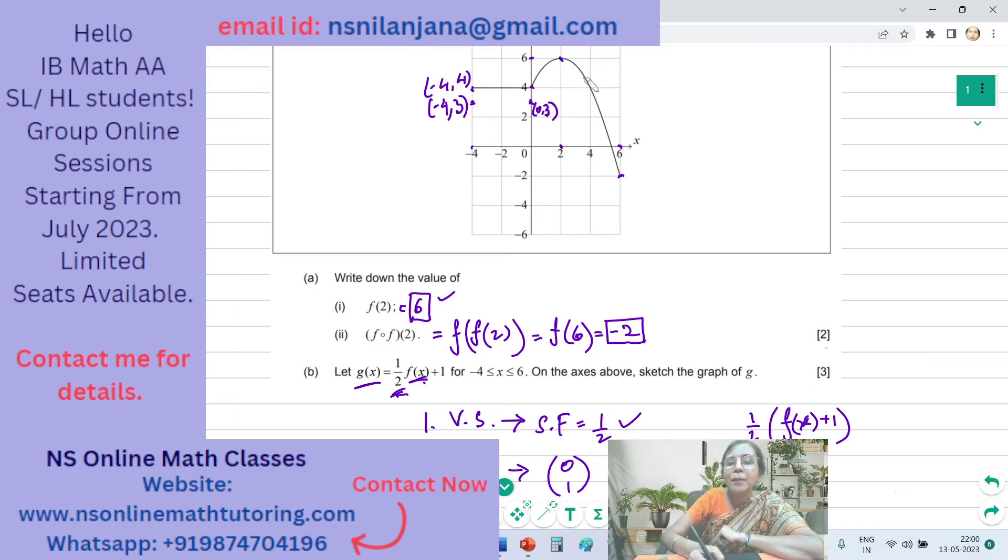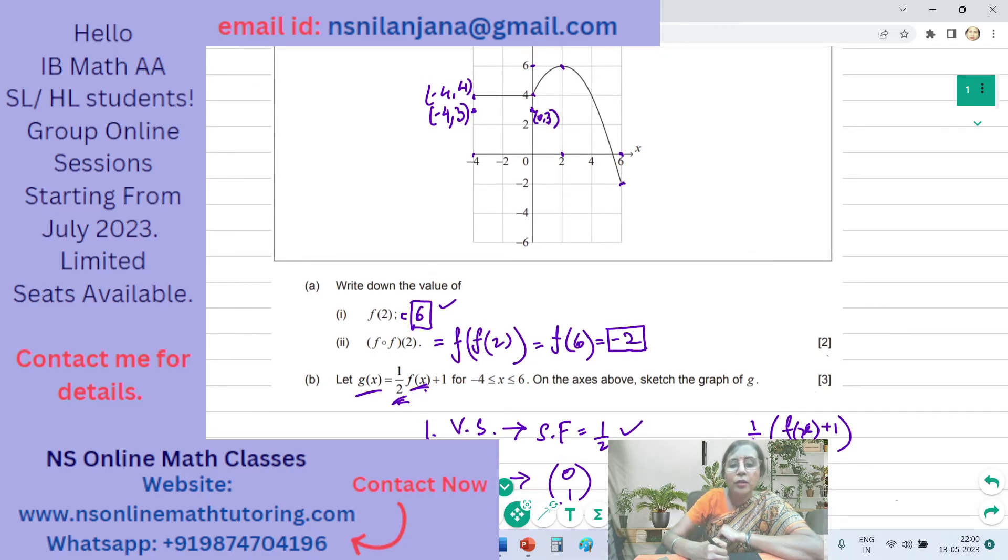And what about the maximum point? What are the coordinates, both the X and Y coordinates of the maximum point? They are 2 comma 6. So half of 6 is 3, 3 plus 1 is 4. Therefore, the point will be over here, 2 comma 4.